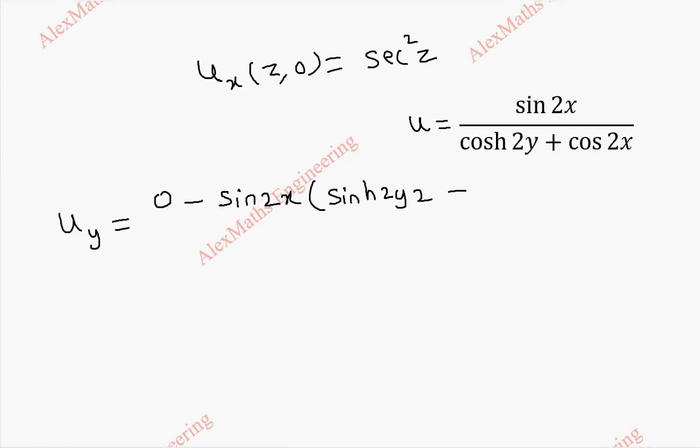Sorry, this term is fully 0 because it is x. We are doing derivative with respect to y. So it is 0. Then whole division we have denominator square. So cosh 2y plus cos 2x whole square. Now u_y of z comma 0. Wherever y is there we have to put 0. When I put 0 here the entire term becomes 0.